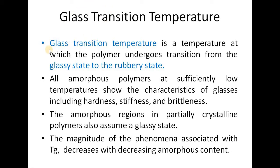How can we define the glass transition temperature? The glass transition temperature is a temperature at which a polymer undergoes transition from the glassy state to the rubbery state. All amorphous polymers, or the amorphous regions in semi-crystalline polymers, will show the characteristics of glasses at sufficiently low temperatures, such as hardness, stiffness, and brittleness. These phenomena associated with Tg decrease with decreasing amorphous content in the polymer.